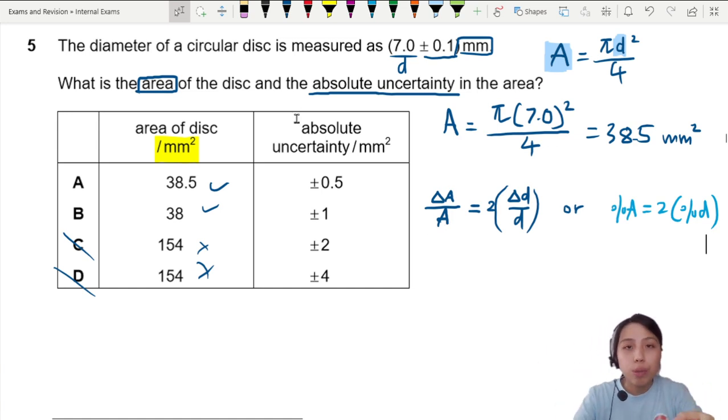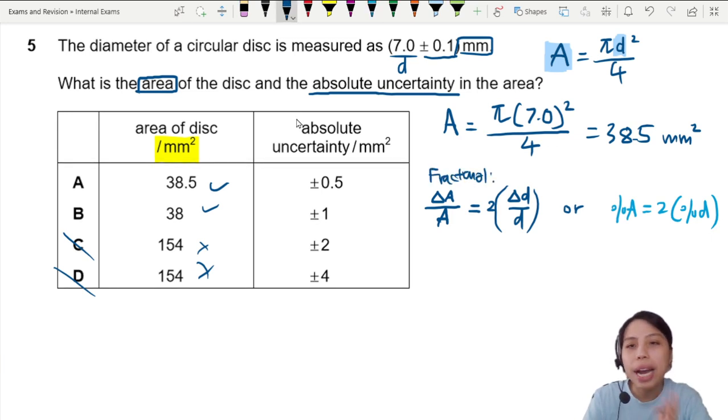Okay, so remember, you cannot use absolute uncertainty. You must use fractional uncertainty to combine the uncertainties.